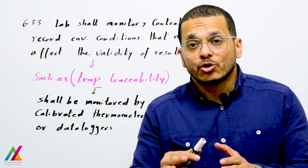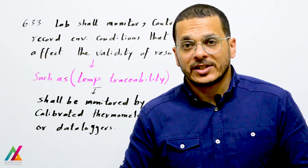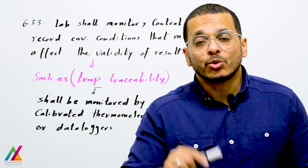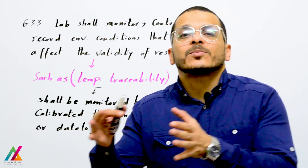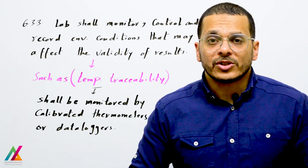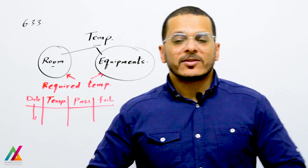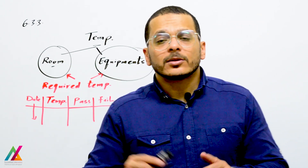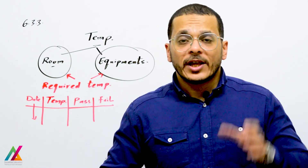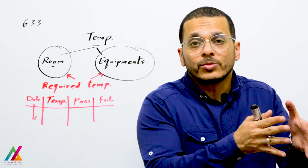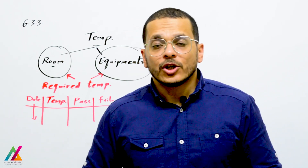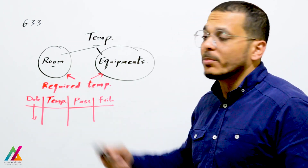If you determine that any environmental condition inside a unit may affect the validity of results, you shall monitor it using specific equipment - for example, temperature traceability using calibrated thermometers or data loggers. For all determined environmental conditions, you shall have a specific form. For temperature, you will determine monitoring requirements for rooms and also for equipment such as freezers, water baths, and others.